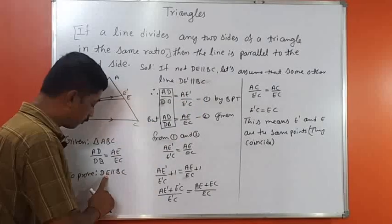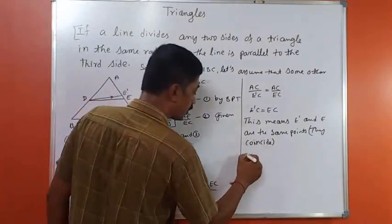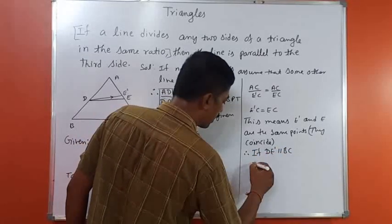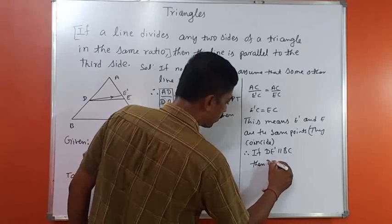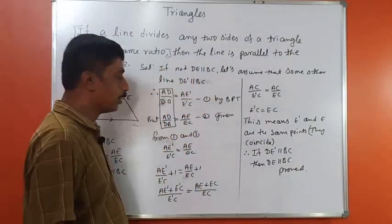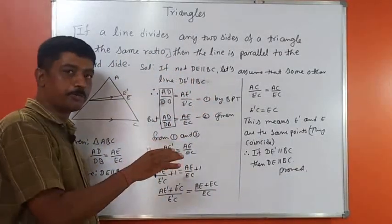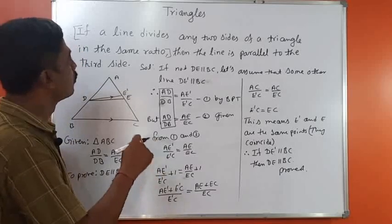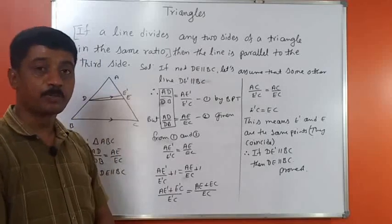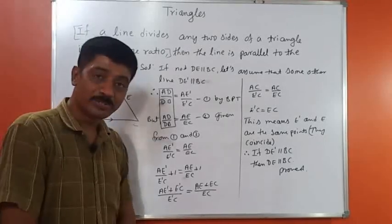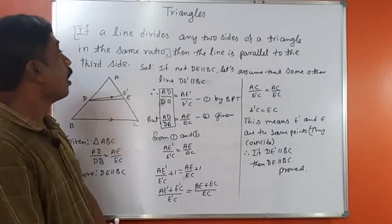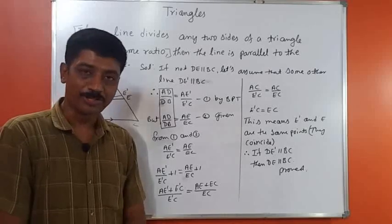Therefore DE is parallel to BC — it is proved. If E' and E were different it would be impossible to prove this theorem. I suggest you go back to the Basic Proportionality Theorem that I explained, then come back to this and study it again. You will get a very clear picture of how to solve these two theorems. Good luck!